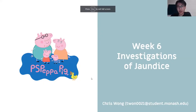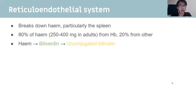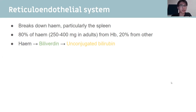Hi, I'm Chris and I'll cover investigations of jaundice. Just an intro on the reticular endothelial system: it breaks down heme — mainly the spleen does this. About 80% of heme comes from hemoglobin and 20% from other sources. Heme gets converted into biliverdin (a greenish pigment), which becomes unconjugated bilirubin (an orangey color).